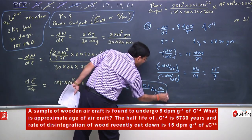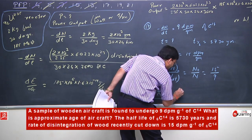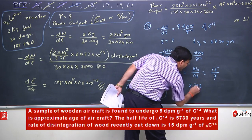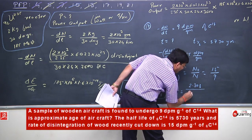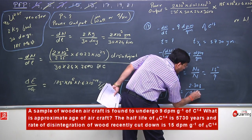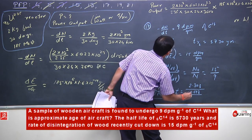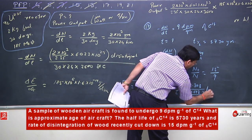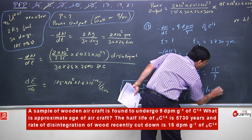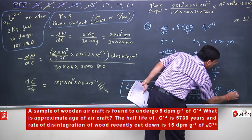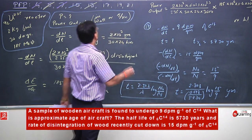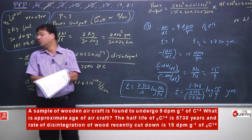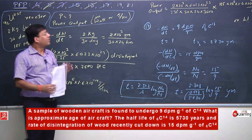Then we say age is 2.303 upon lambda into log of N₀ by N. To apply this expression, lambda equals 0.693 upon half-life, which is 0.693 upon 5730, into log of 15 by 9. This would be the answer in years. Now you need to solve it in order to get the answer.